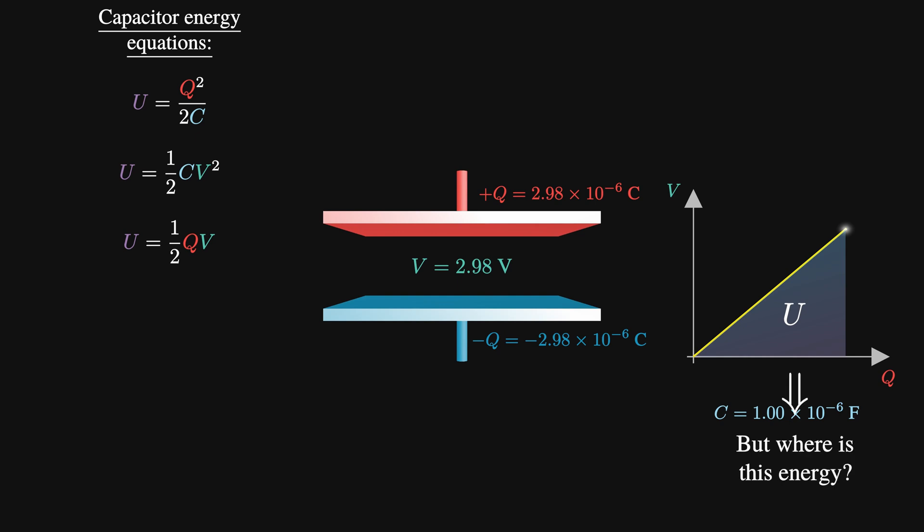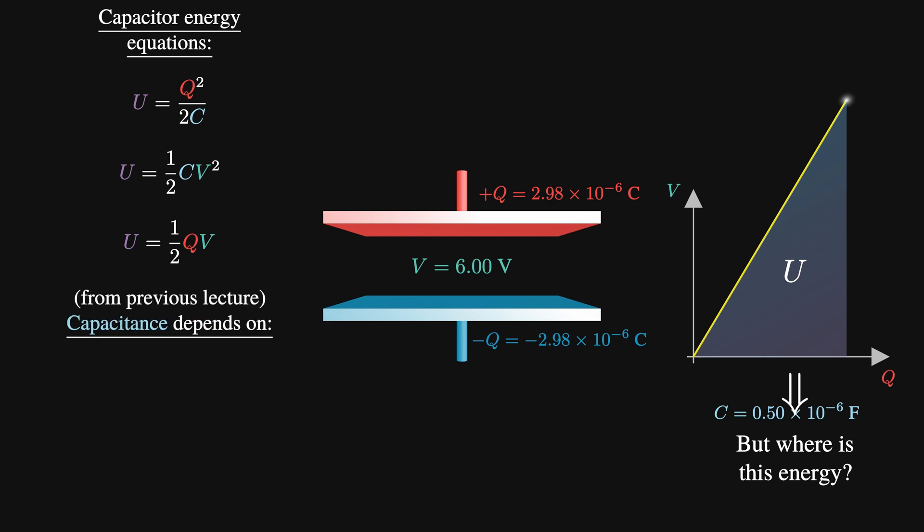As we said at the start, we might think it's just stored in the plates as charge, but as we said in the previous part of the series, the charge is predetermined by the capacitance. So, the same amount of charge in a different capacitor has a different energy. And capacitance, as we showed, does not fundamentally depend on the voltage or the charge. Instead, it is entirely determined by the geometry of our system and the permittivity of our insulator.